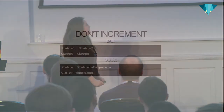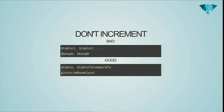Variable names shouldn't be incremented. I've seen this a lot — like table1 and table2. The name of the variable should describe the reason it was created. If you have a variable named 'table' and you want to compare it to a different table, the second one can be named 'tableToCompareTo'. Then you can write a compare method and call it as 'compare table with tableToCompareTo' — it reads very nicely.